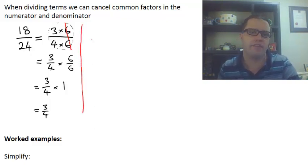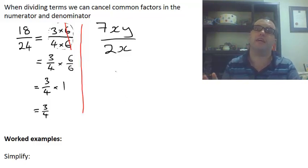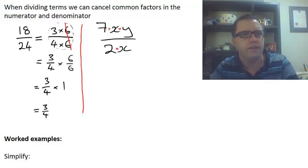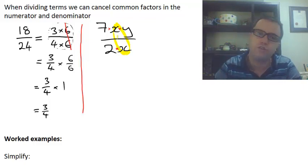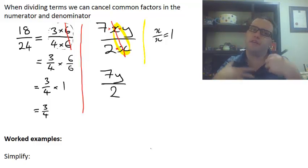Similarly, if we have an algebraic fraction like 7xy divided by 2x—you might think that looks terrifying—this is just 7 times x times y over 2 times x. The same as how 6 divided by 6 is just 1, x divided by x is also just 1. Remember, x/x equals 1. So our x's here can cancel out, and we're just left with 7y/2. When we're dividing terms together, we cancel out our common factors in the numerator and denominator.